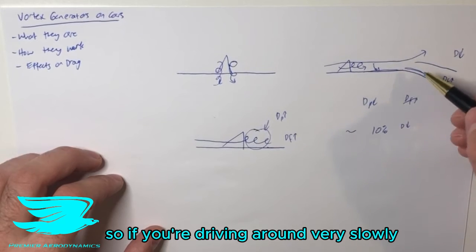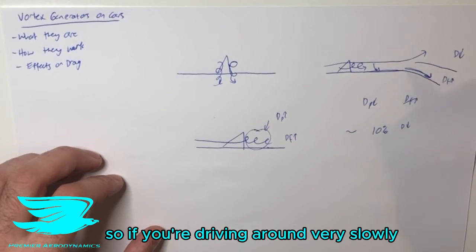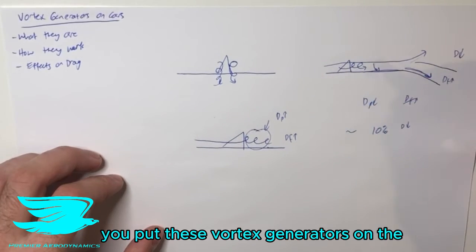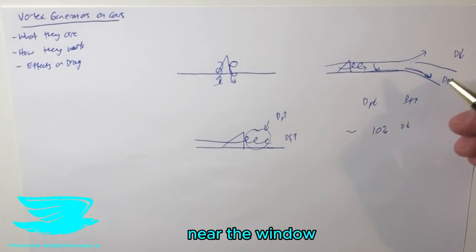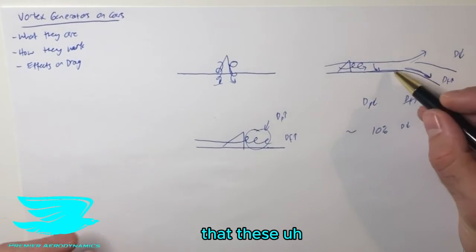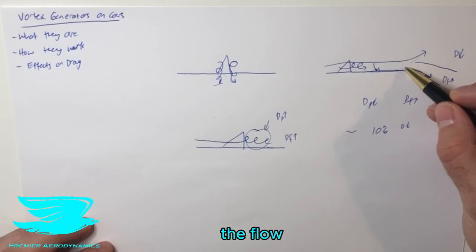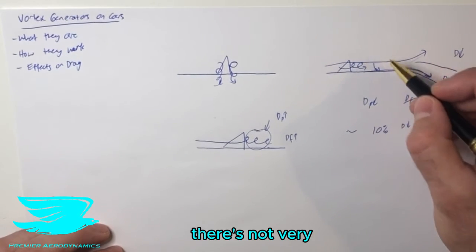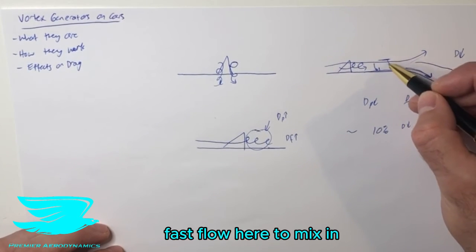And also, it also depends on the speed. So if you're driving around very slowly and the flow is detaching, you put these vortex generators on the back of the roof near the window. There's no guarantee that these vortex generators will help the flow stay attached that much longer, because you're not really traveling that fast. So first of all, there's not very fast-moving flow here to mix in, but also these vortices aren't as strong either.